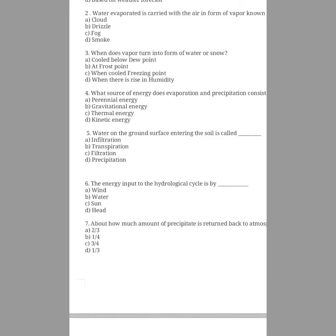Question number seven: about how much of precipitation is returned back to the atmosphere? The options are two-thirds, one-fourth, three-thirds, one-third. The answer is option A, two-thirds. Because precipitation includes all water that falls from the atmosphere to the earth surface in any form. About two-thirds of precipitation that reaches the land surface is returned back to the atmosphere by water surface, soil, and vegetation.